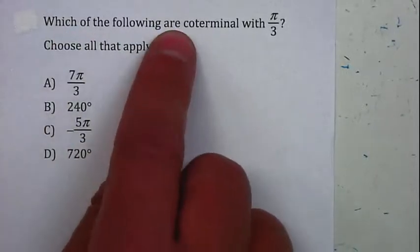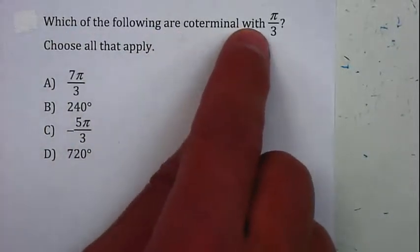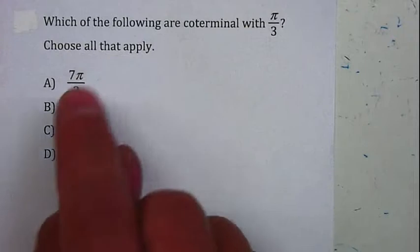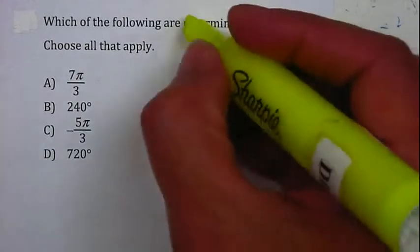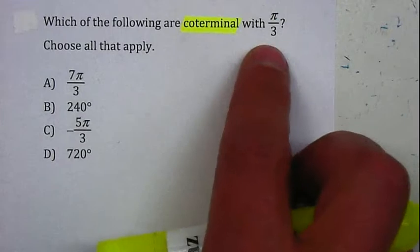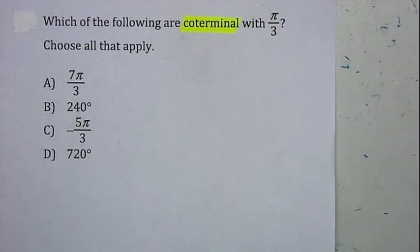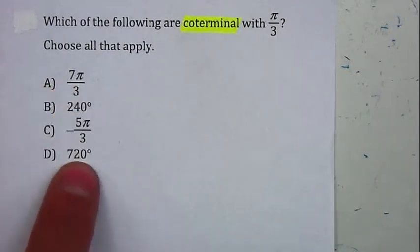Which of the following are coterminal with π over 3? Choose all that apply. So I need to be able to find coterminal angles or angles that are coterminal with π over 3. If you notice, your answers are in radians and degrees.